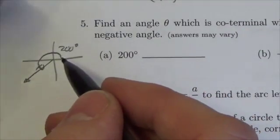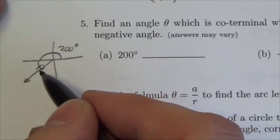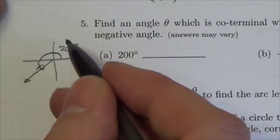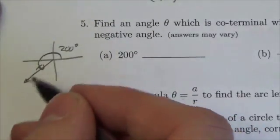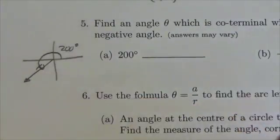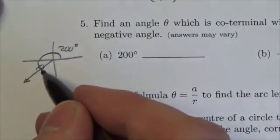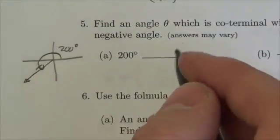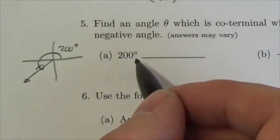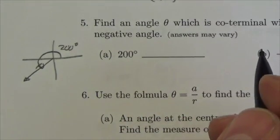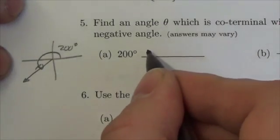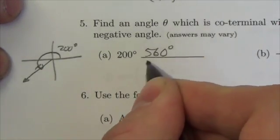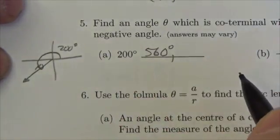So to get a positive co-terminal angle, I take this angle right here and I continue my counterclockwise rotation, but I go all the way around. Now, how far around do I have to go to get back to here? I think it should be pretty clear. It's 360 degrees, the full circle. So my first angle is going to be 200 degrees plus 360. So 200 degrees plus 360 is going to be 560. There's my first angle.